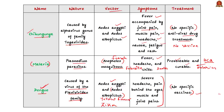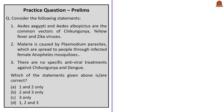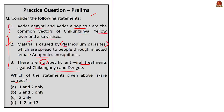With this information, let's take up the given question. Three statements are given: (1) Aedes aegypti and Aedes albopictus are common vectors of chikungunya, yellow fever, and Zika virus; (2) Malaria is caused by plasmodium parasites spread through infected female Anopheles mosquitoes; (3) There are no specific anti-viral treatments against chikungunya and dengue. Here all the given statements are correct, therefore the correct answer is option D — 1, 2, and 3.